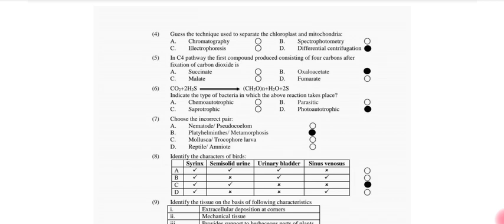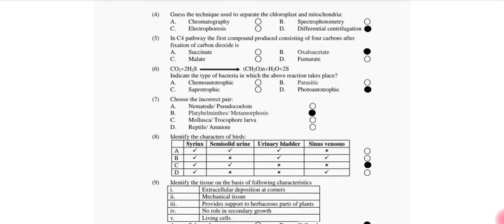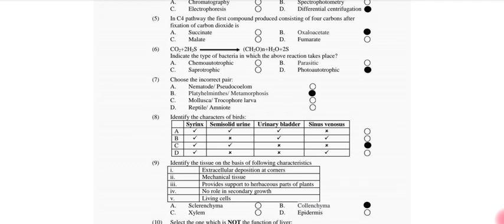H2S indicates the type of bacteria that is photoautotrophic, which uses H2S instead of water. Choose the correct pair: Platyhelminthes metamorphosis. Identify the characteristics of birds. So that is option C: syrinx.